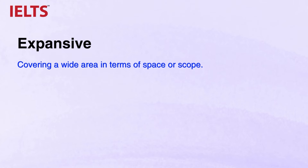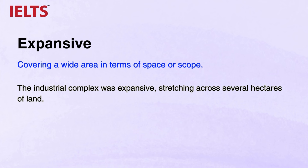The first adjective is EXPANSIVE, which means covering a wide area in terms of space and scope. The industrial complex was expansive, stretching across several hectares of land. Use this adjective to describe areas that cover a wide extent on the map, such as expansive parks or expansive agricultural lands. You might be familiar with the verb format EXPAND, and the adverb is EXPANSIVELY.